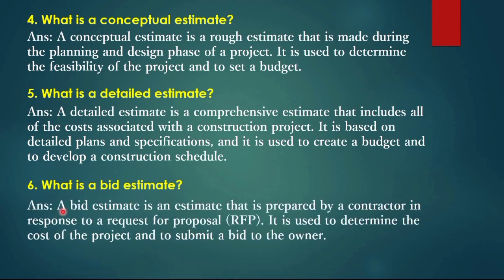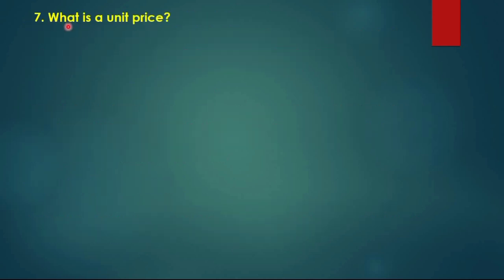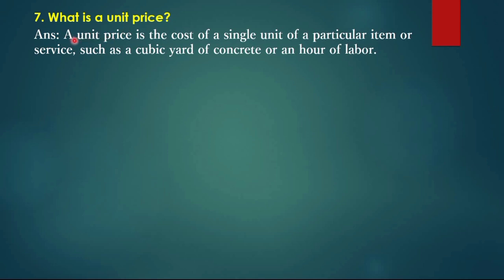Question 6: What is a bid estimate? A bid estimate is an estimate prepared by a contractor in response to a request for proposal (RFP). It is used to determine the cost of the project and to submit a bid to the owner. Question 7: What is a unit price? A unit price is the cost of a single unit of a particular item.